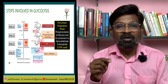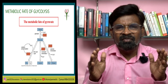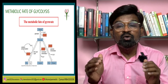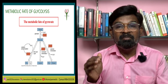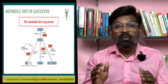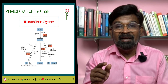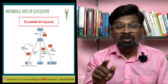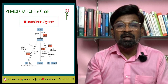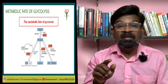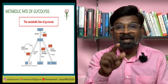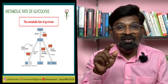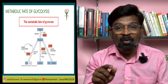The pyruvic acid thus produced is the key product of glycolysis. The overall reaction of glycolysis is: glucose + 2Pi + 2ADP + 2NAD → 2 pyruvate + 2ATP + 2NADH + 2H⁺. Two molecules of NADH on oxidation produce six molecules of ATP. Therefore, a net gain of 8 ATP molecules occurs during glycolysis.